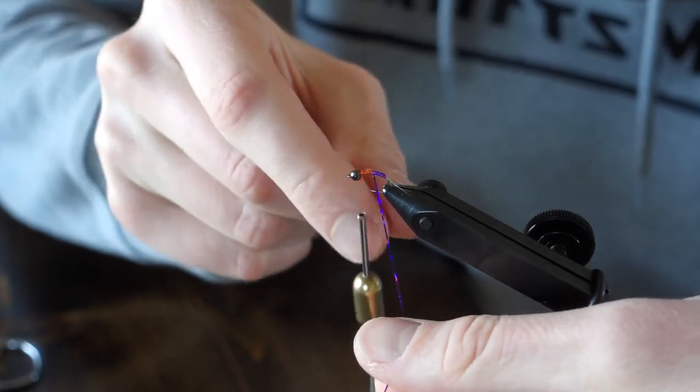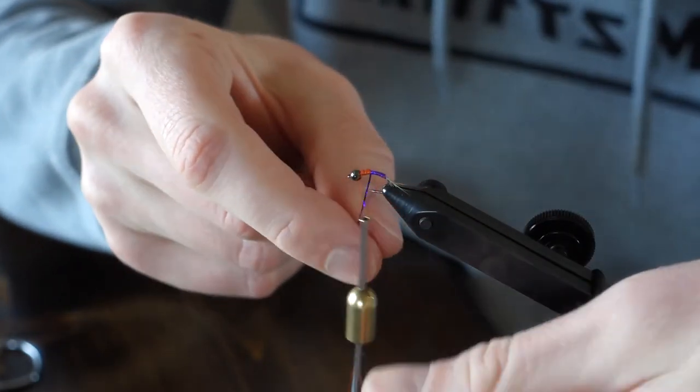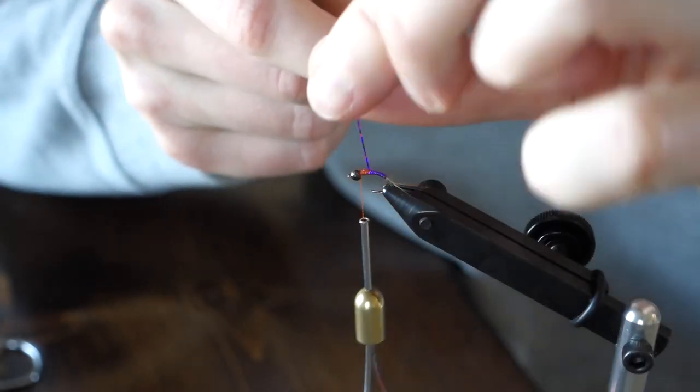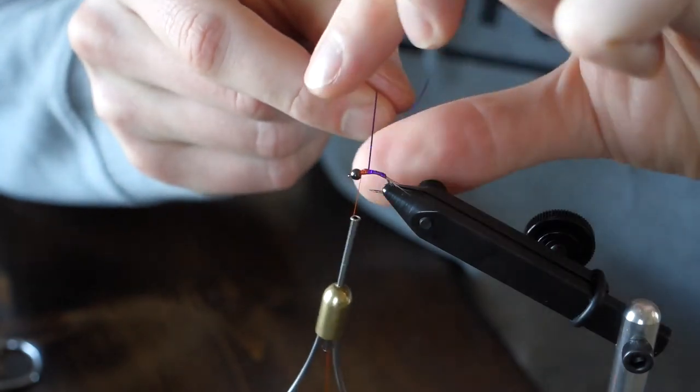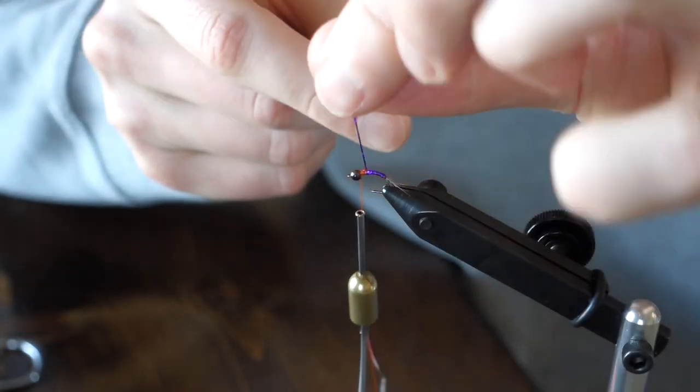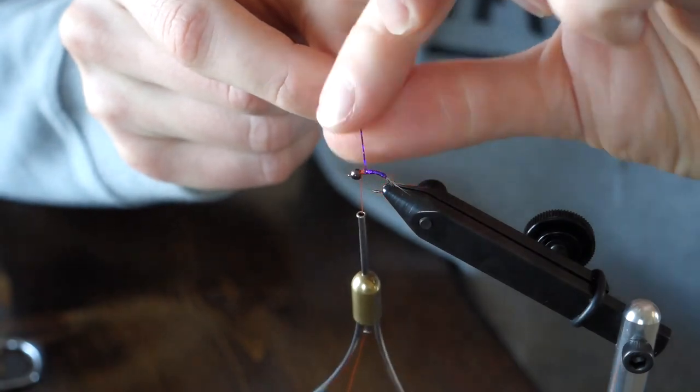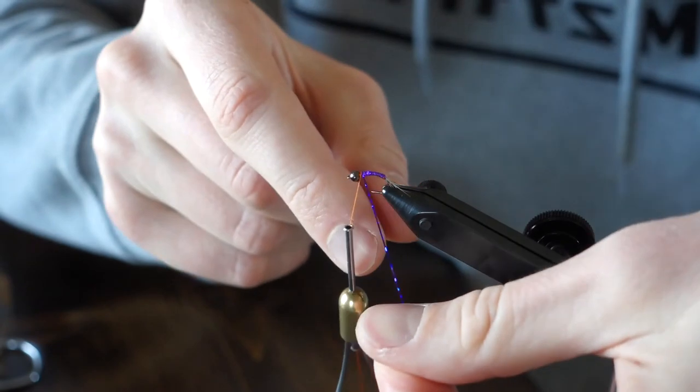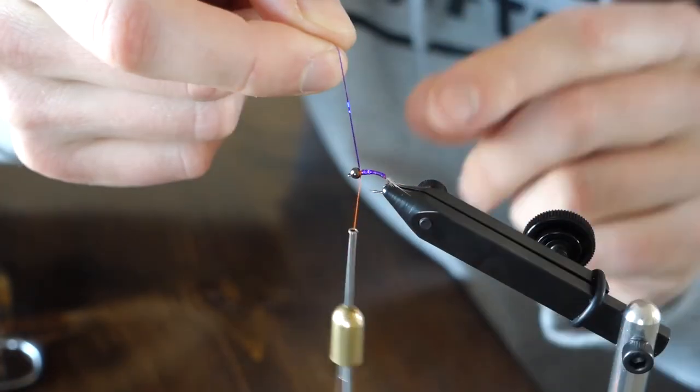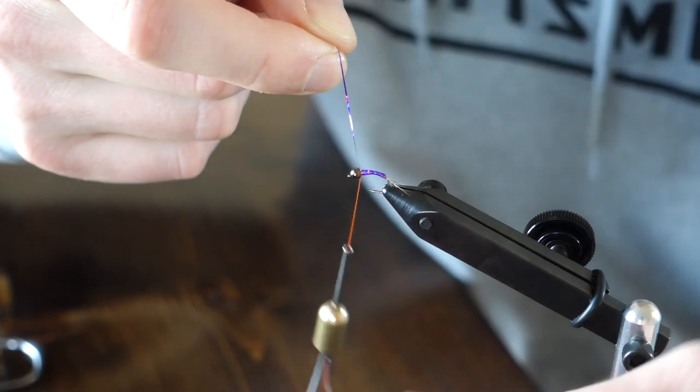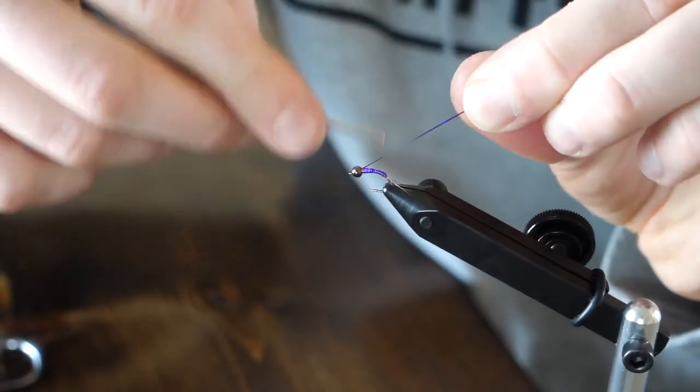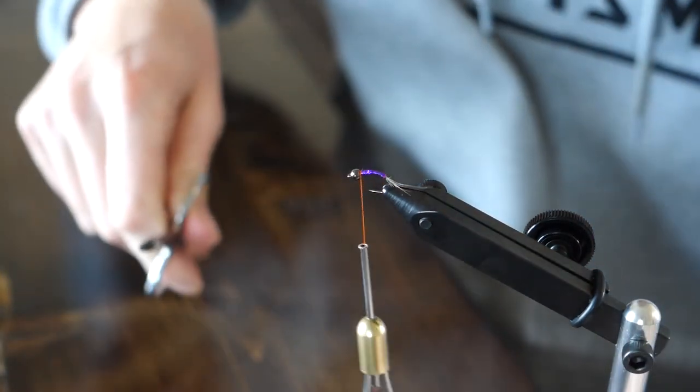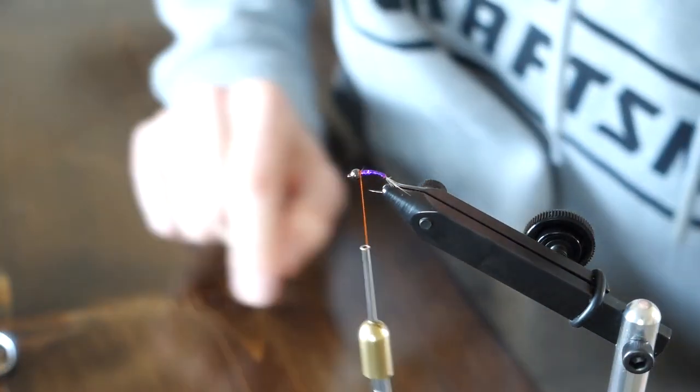We're going to take the wraps all the way up to the bead head and tie it off. A couple wraps in front of it. That'll help build up that hot spot.